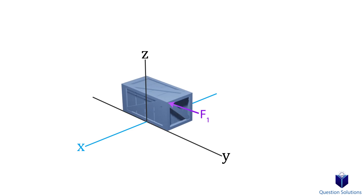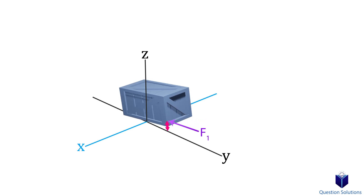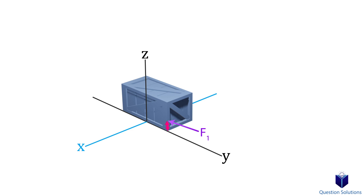So the moment created by force F1 is simply the force times the perpendicular distance to the x-axis. If however we move the force down, then the moment created would be less since the perpendicular distance is also less.